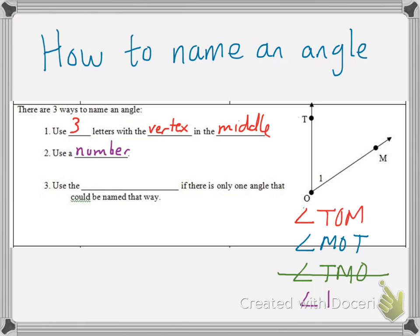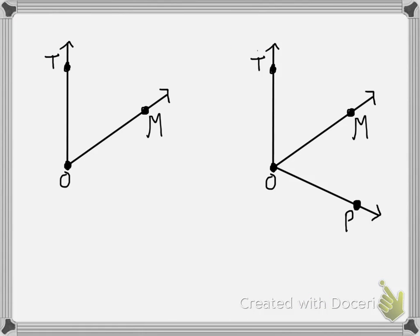The last way, which is also a shorter version, is to use the vertex letter alone if there's only one angle that could be named that way. In other words, for this angle, I could name it angle O. Now, to see why this is, that requires a little bit more explanation. So let me show you. Consider these two situations. We have, on the left side, the same picture we had before, where I said that we could name this angle O. If we're only looking at this picture, if I say angle O, you're pretty sure which one I'm talking about. It's that angle right there.